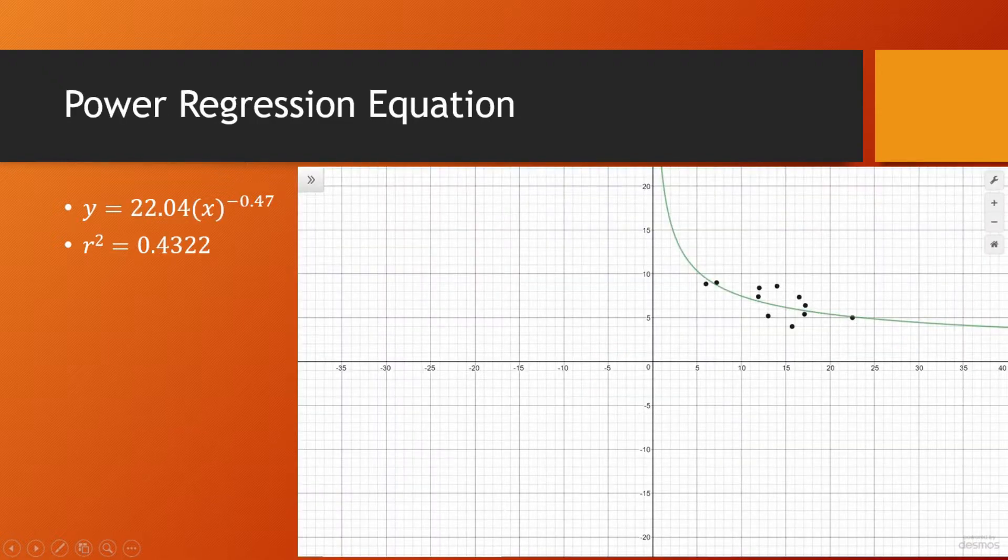Okay power regression equation r squared was 0.4322 which is the lowest one we've had yet and you can see on the graph there's a lot of spacing between the curve of best fit and the higher and lower points and it doesn't really intersect many points.